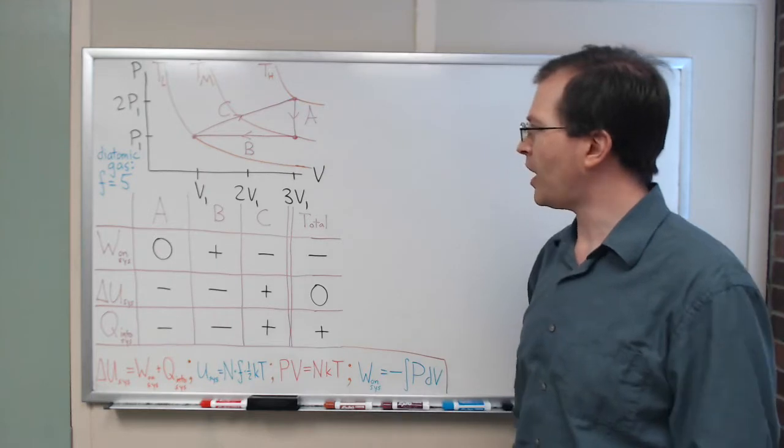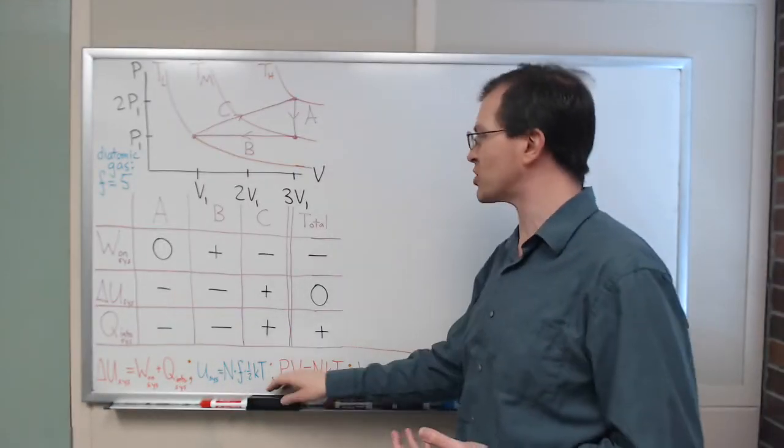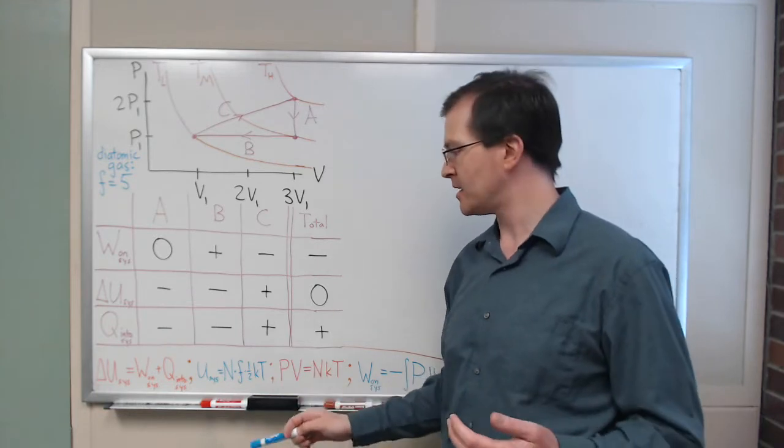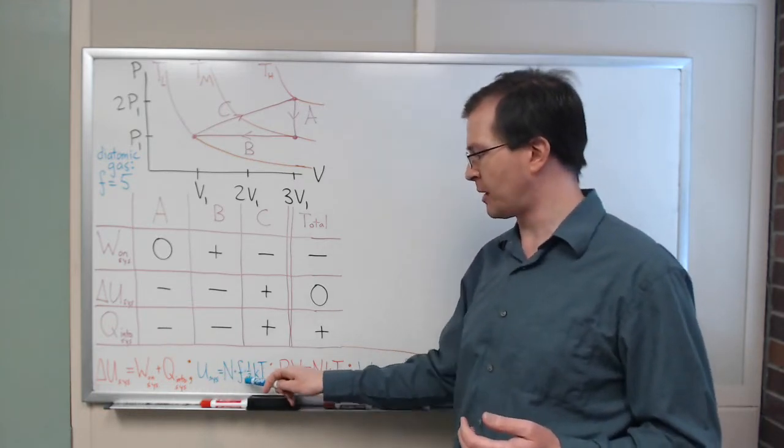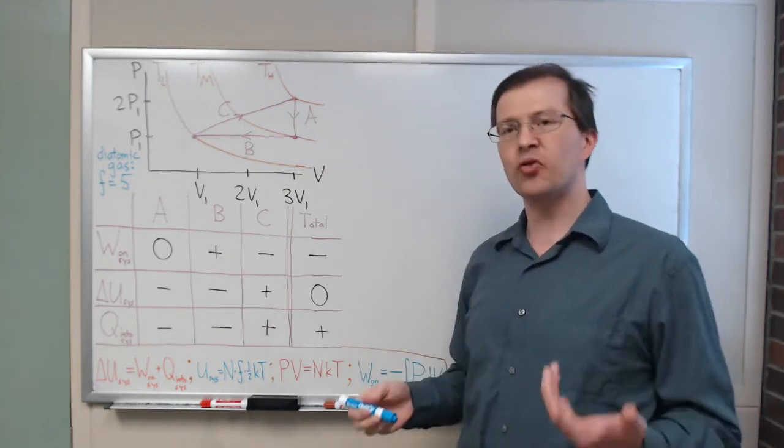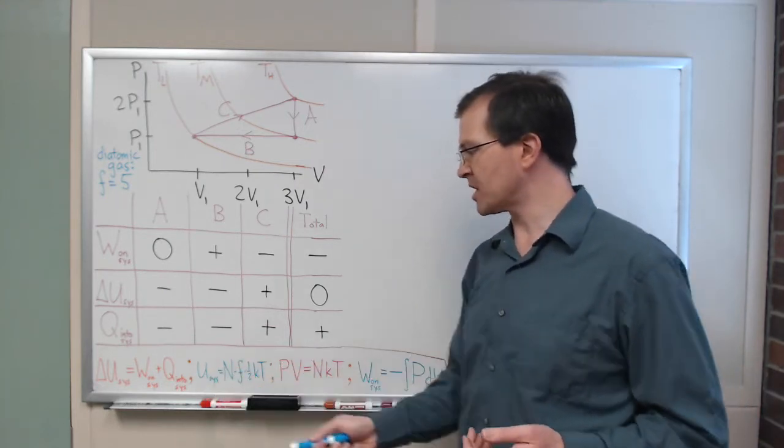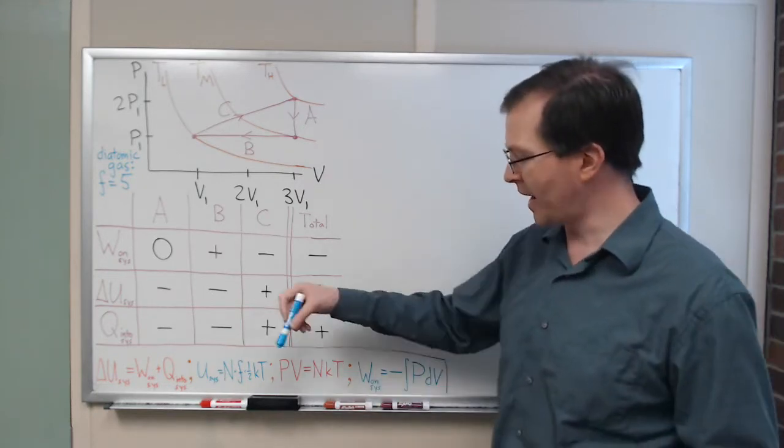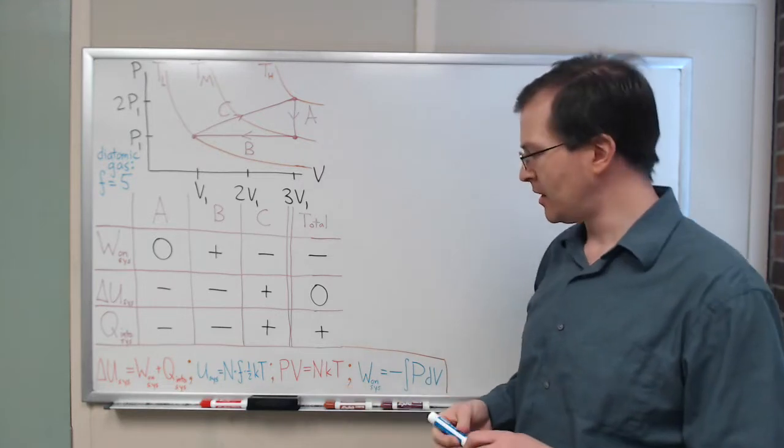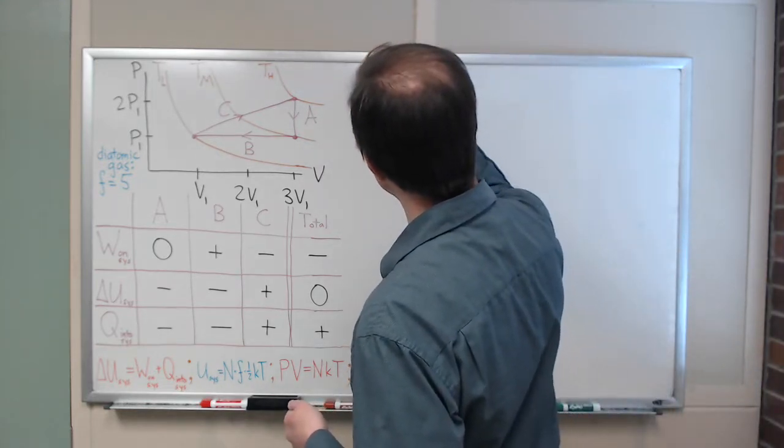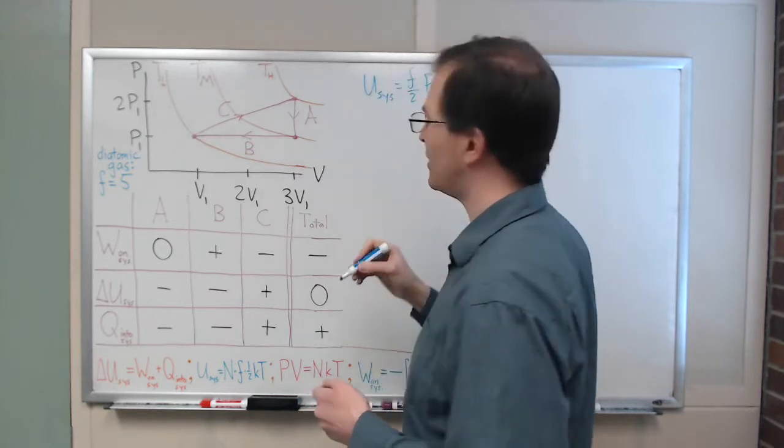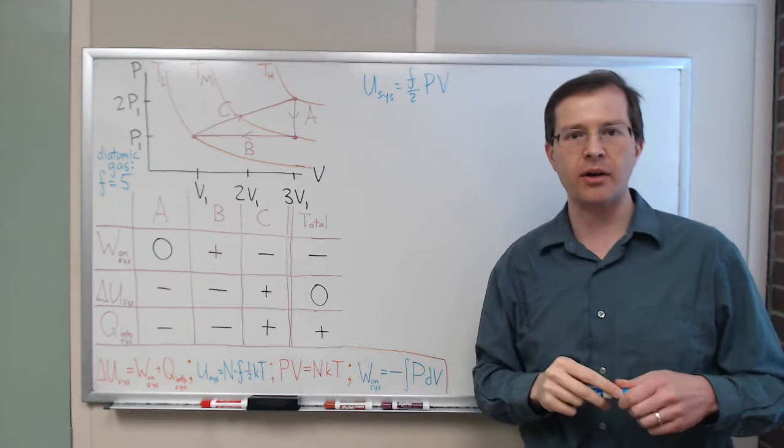What about that delta U? I figured out last time it needs to be negative. How do we get the actual number? We figured out from the Equipartition Theorem that for an ideal gas, the energy is equal to n times the number of degrees of freedom per molecule times one-half kT. For a diatomic gas, number of degrees of freedom per molecule is five. We can put the Equipartition Theorem together with the ideal gas law. So I can say that U system is equal to f over two times pressure times volume.